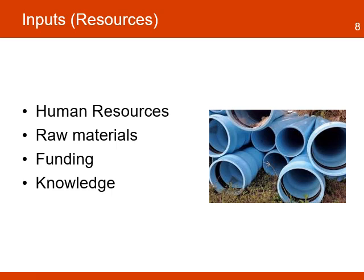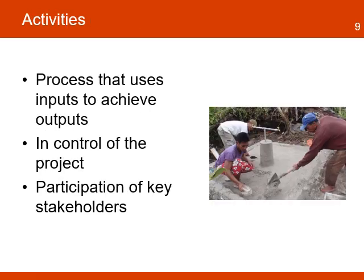Inputs include the human resources, raw materials, financial, organizational, and community resources, and even the experience and knowledge a project has available to carry out the work. Activities are the processes, tools, events, technology, and actions that are used in order to deliver specific output. These activities are in control of the project, but require the active participation and involvement of key stakeholders.